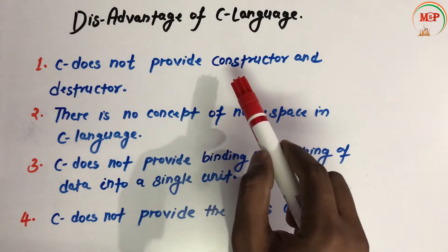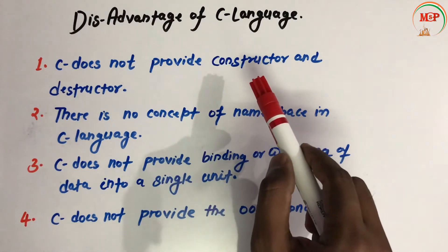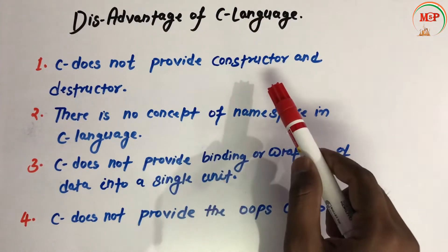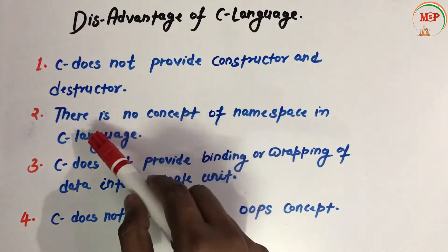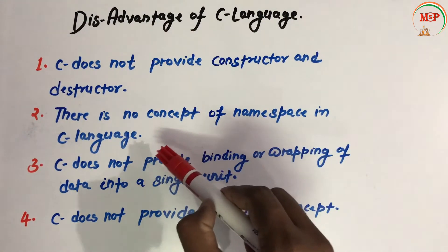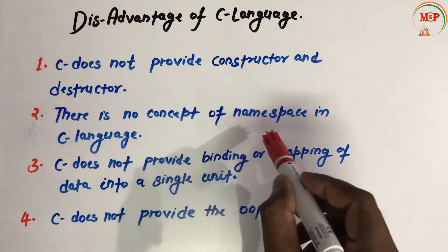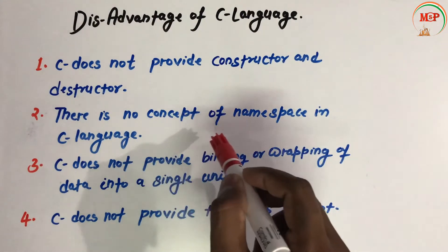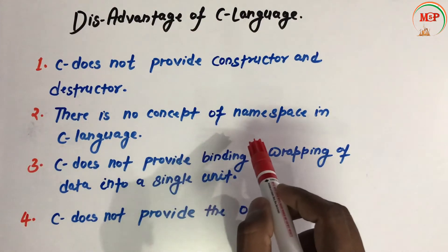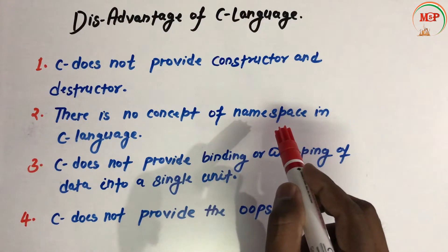The concept of constructing or destroying memory is found in C++, not in C. Another disadvantage is there is no concept of namespace in C language. If we have duplicate data, namespaces cannot be used to handle it.